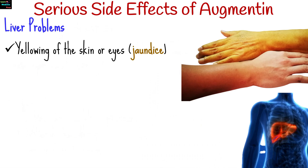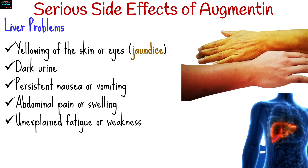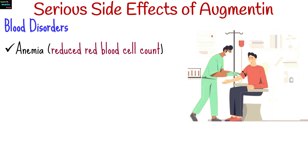Augmentin can rarely cause hepatotoxicity, which causes liver damage or inflammation. Signs of liver problems may include yellowing of the skin or eyes, dark urine, persistent nausea or vomiting, abdominal pain or swelling, and unexplained fatigue or weakness.